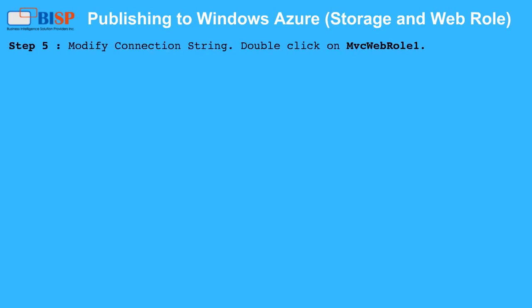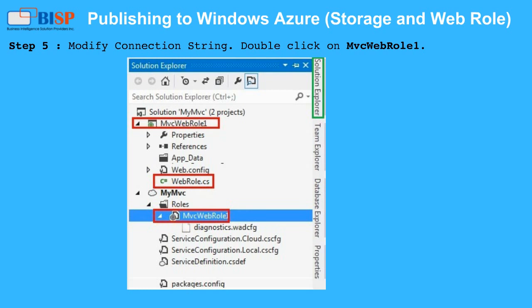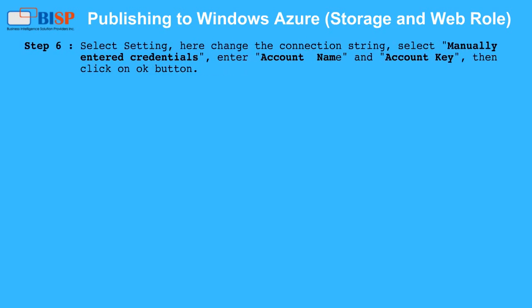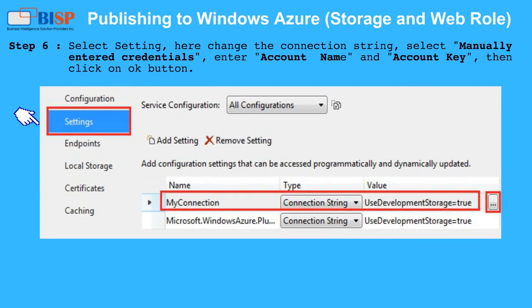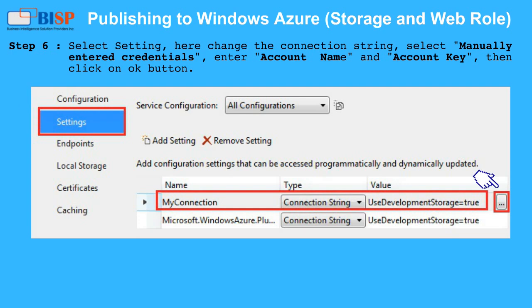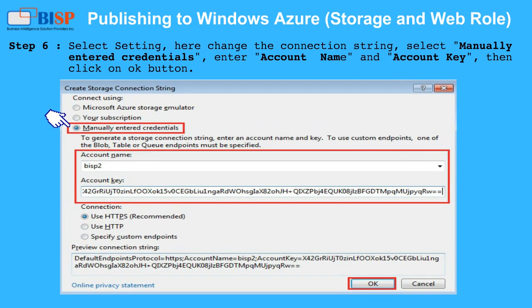Step 5: Modify the connection string. Double click on MVC Web Role 1. Step 6: Select Settings, then change the connection string. Select manually entered credentials, enter the account name and account key, then click the OK button.